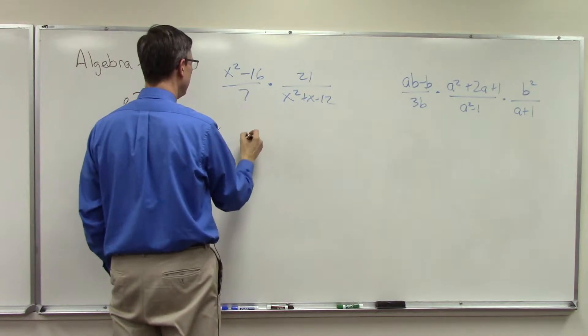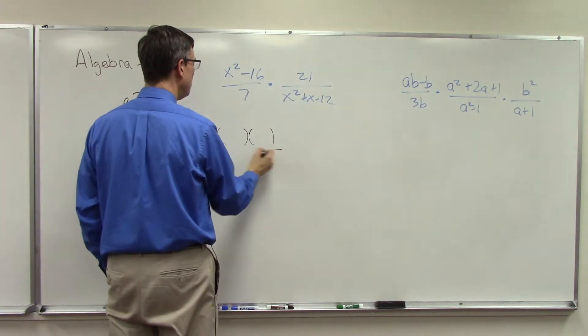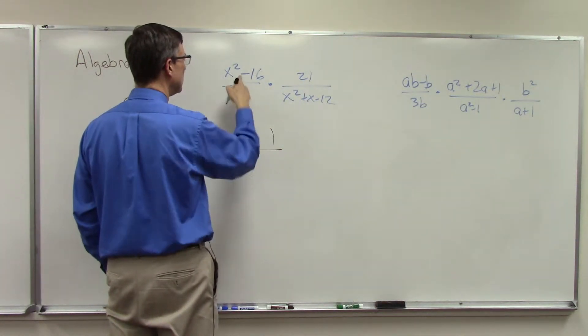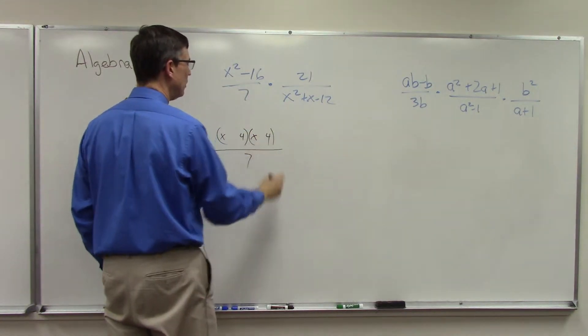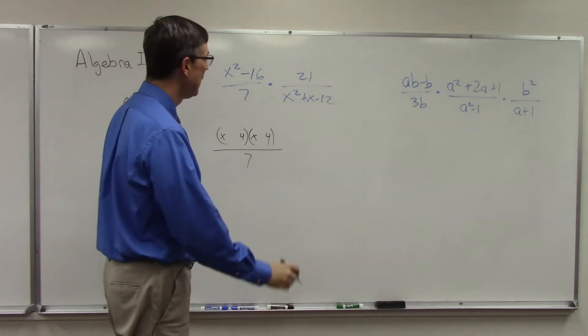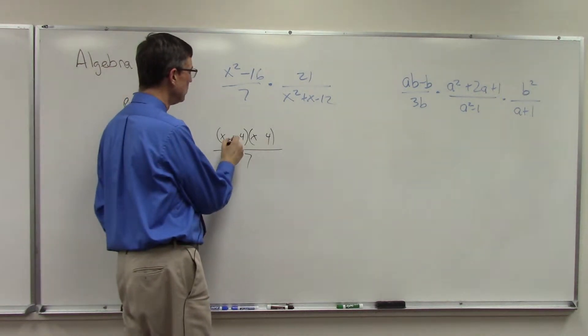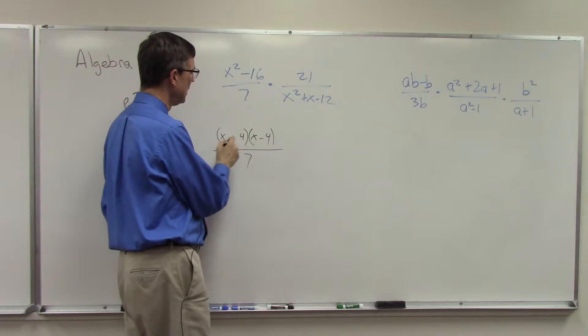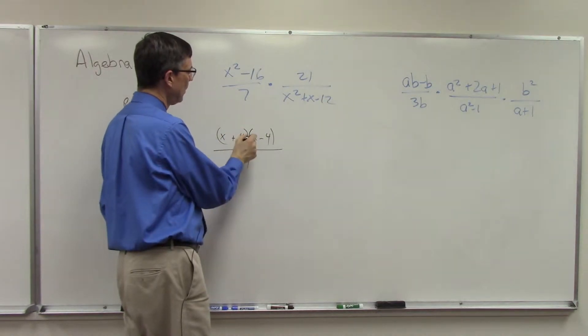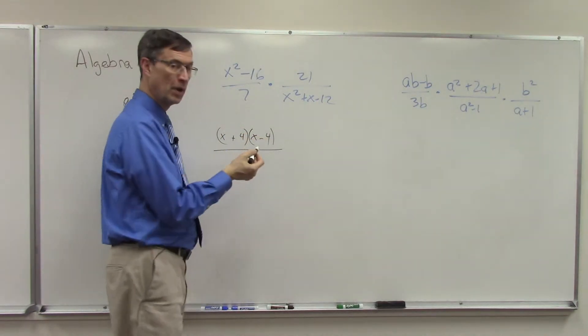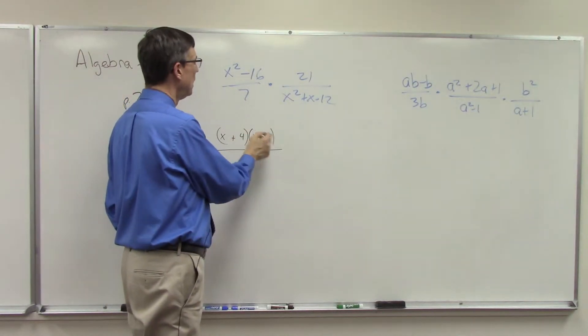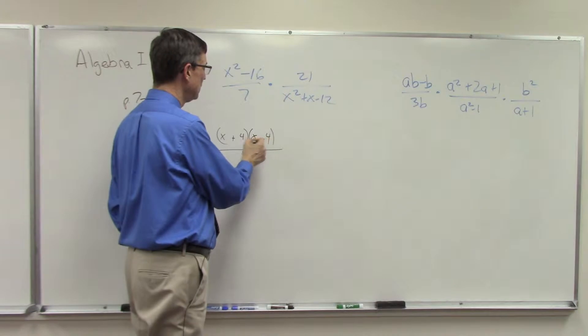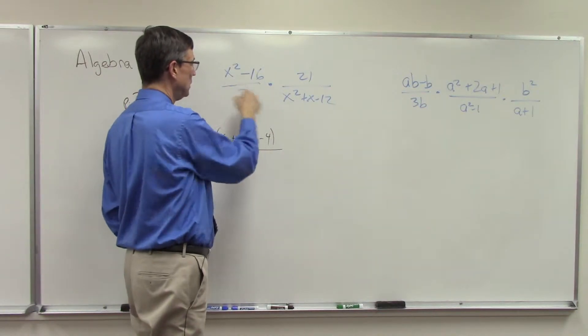Well this I can kind of do the foil method, and remember the middle term is going to cancel out. So I do x and x, take the square root of 16 front and back. And then because there is no middle term, one's positive one's negative. That way I'll get positive 4x and negative 4x when I do the O and I in the foil method. And then for the last I'll have 4 times 4, negative times positive, so negative 16.